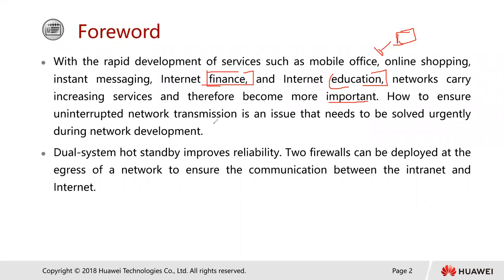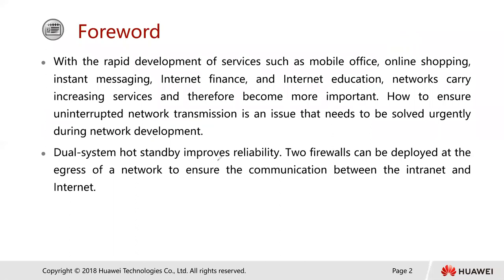So that's why networks carry increasing services and therefore become more important. How to ensure uninterrupted network transmission is an issue that needs to be solved urgently during network development — in case a firewall has an issue, how do we make sure there's no interruption on our network transmission? This is what we want to look at in this chapter.